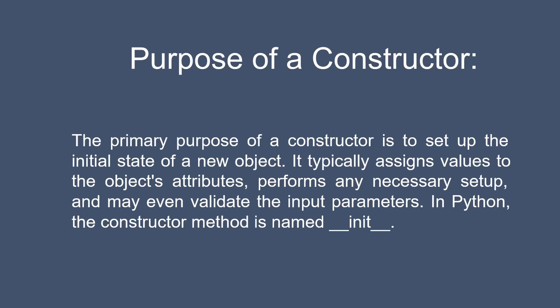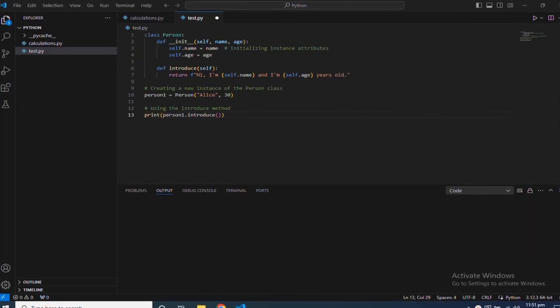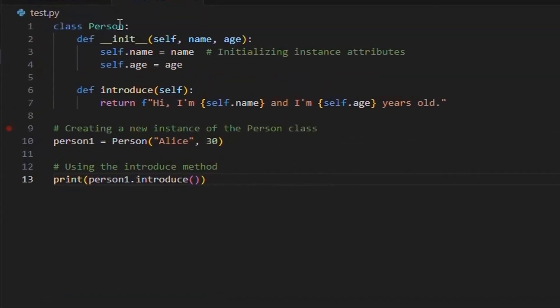In Python, the constructor method is named __init__. You define a constructor within a class using the __init__ method. It is automatically called when a new instance of the class is created, and it usually accepts parameters that are used to initialize the object's state. The first parameter of the constructor is typically self, which refers to the instance being created. For example, a person class has two attributes, name and age, which will be assigned to the object automatically when associated with the class.